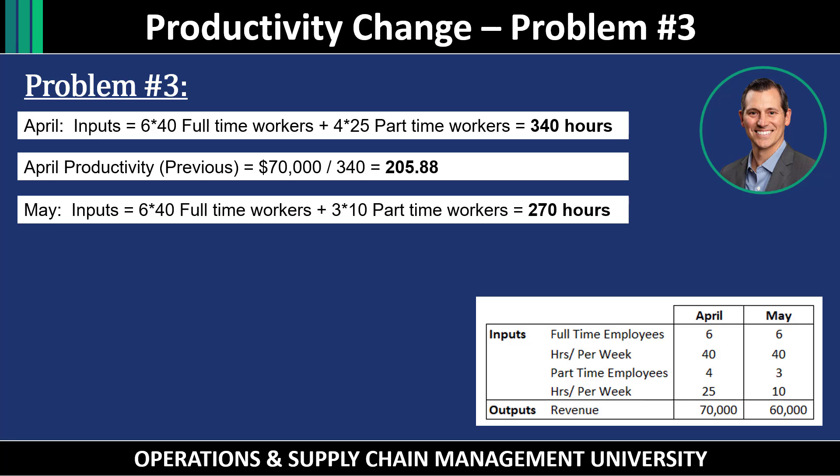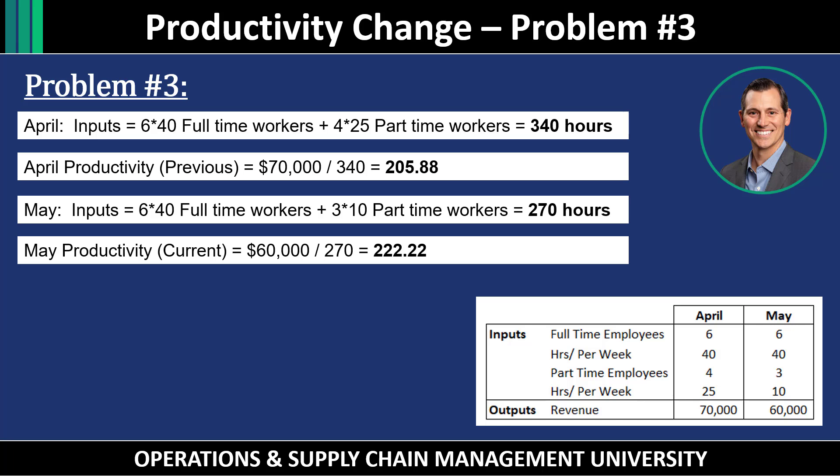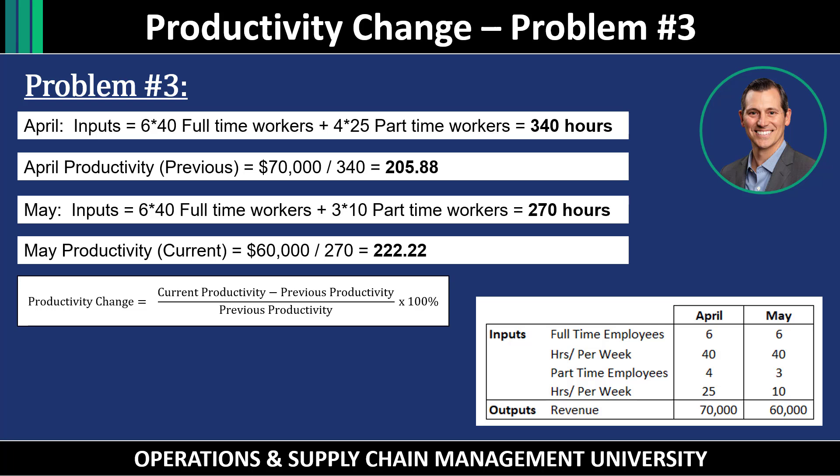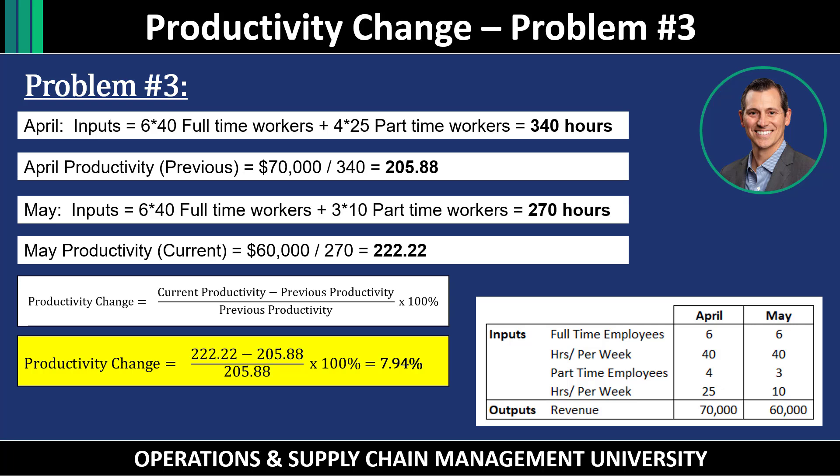For May: inputs are 240 hours of full-time workers (6 times 40), plus 3 part-time workers at 10 hours each, giving 30 part-time hours, for a total of 270 hours. May productivity is $60,000 divided by 270 hours, which equals $222.22. To calculate the change: 222.22 minus 205.88 equals 16.34. Then 16.34 divided by 205.88, multiplied by 100, gives a 7.94% increase in productivity from April to May.